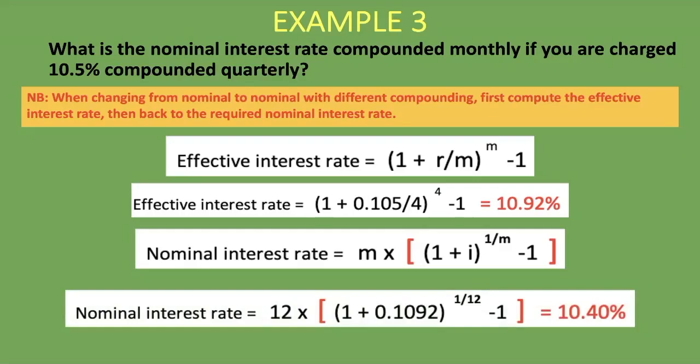Always remember to follow those steps. Your answer might be 10.41% due to slight rounding differences — both would be marked correctly. I hope you now know how to calculate the nominal interest rate given an effective interest rate, as well as when converting between nominal rates with different compounding. I hope you've gained value from this lesson — if you have, please subscribe to our channel, like this video, and share it. Till next time, cheers.